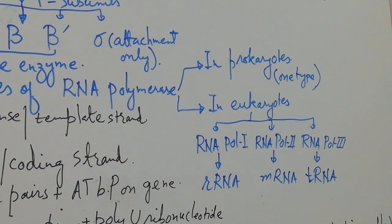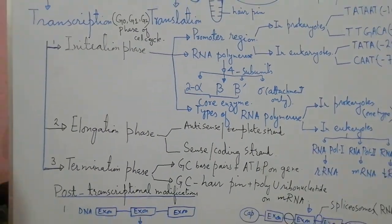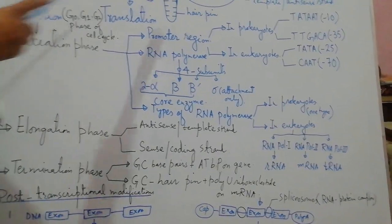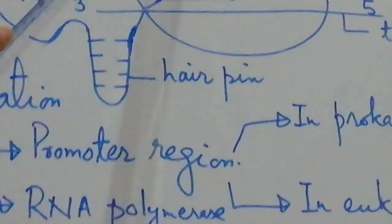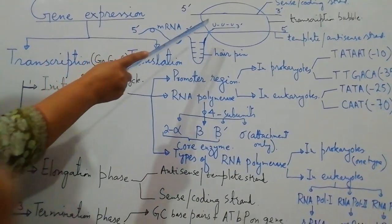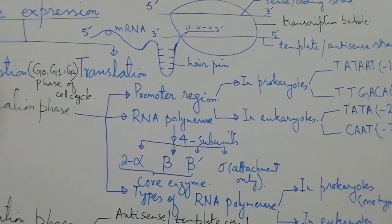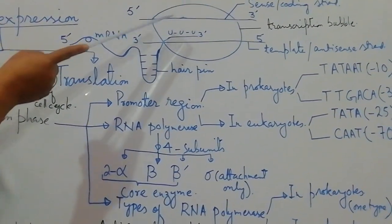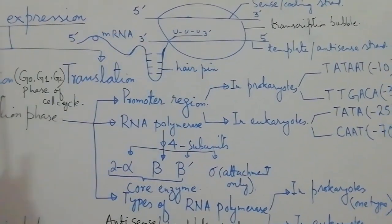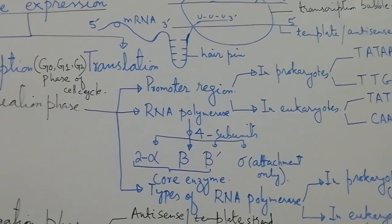As RNA polymerase binds to the promoter, the DNA duplex unwinds, base pairs are broken down, and a bubble-like structure appears which is called the transcription bubble.